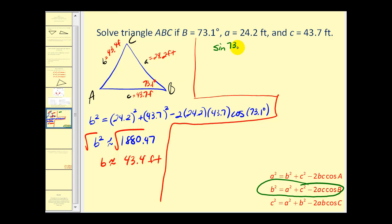Let's use angle B. The sine of 73.1 degrees divided by the opposite side, which is 43.4 feet, must equal the sine of angle A divided by 24.2 feet. Now we'll cross multiply. 43.4 sine A must equal 24.2 times sine 73.1 degrees.